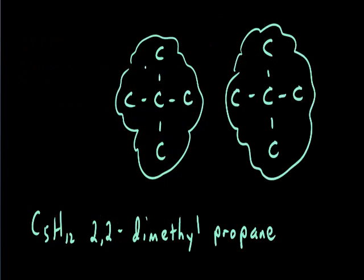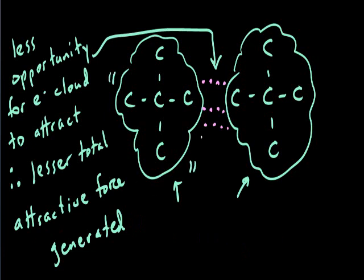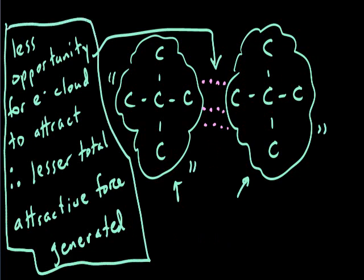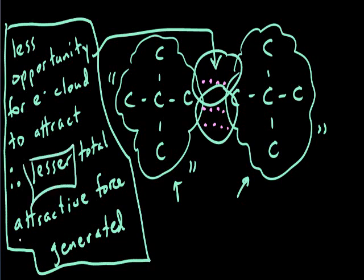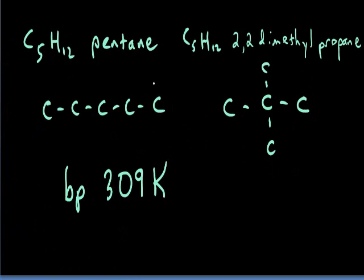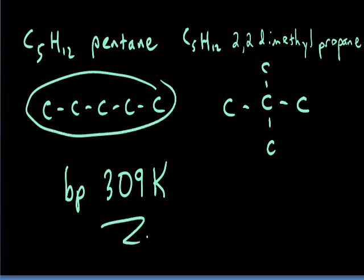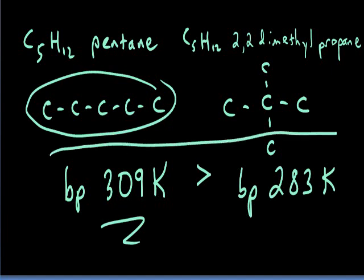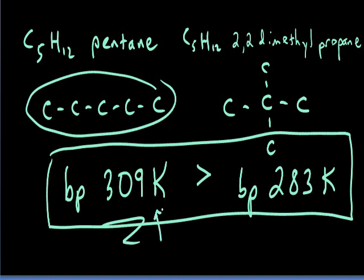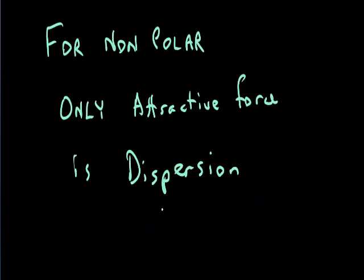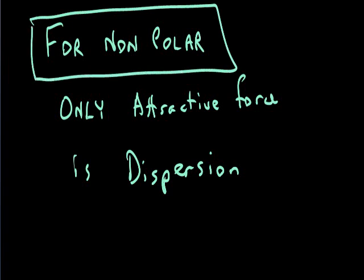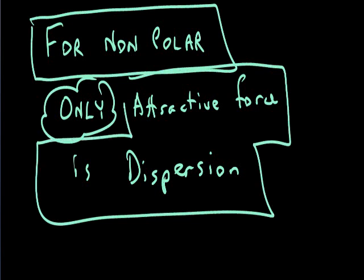The straight-chain pentane has a boiling point of 309 K, greater than 2,2-dimethylpropane's boiling point of 283 K. The higher boiling point is indicative of stronger dispersion forces. Once again, for nonpolar molecules, the only attractive force that exists between them is dispersion forces.